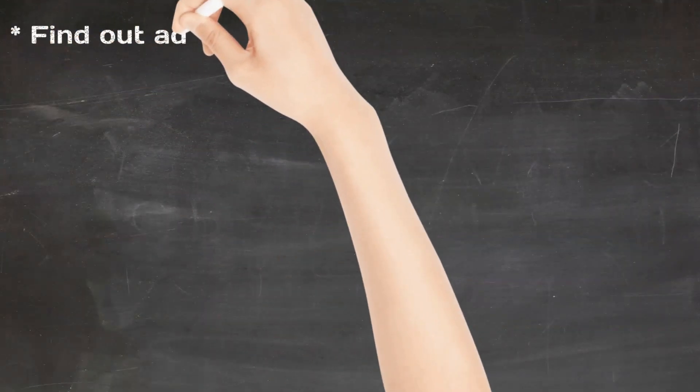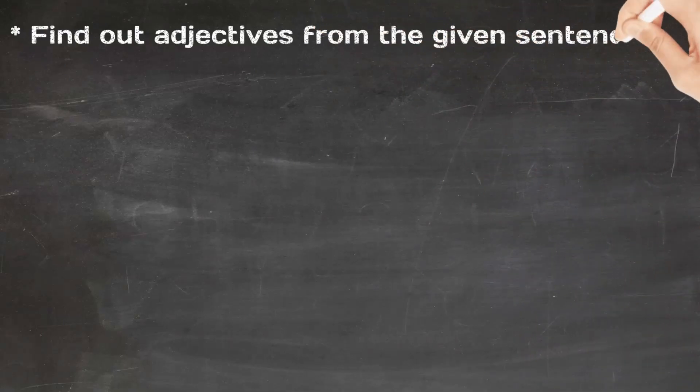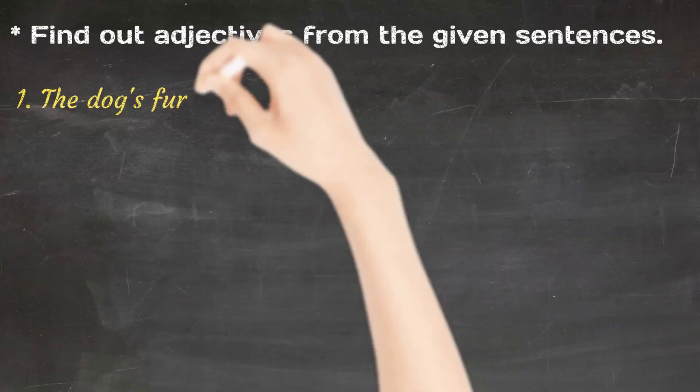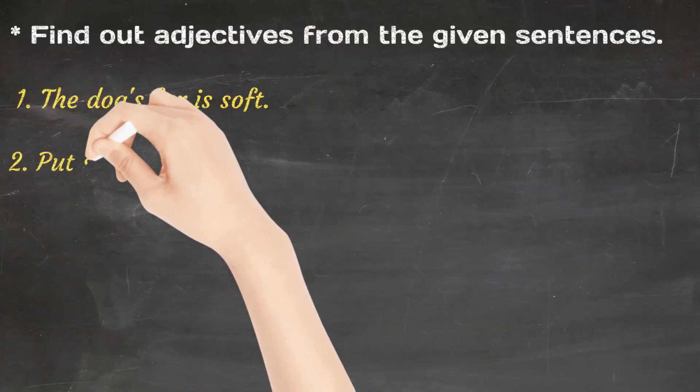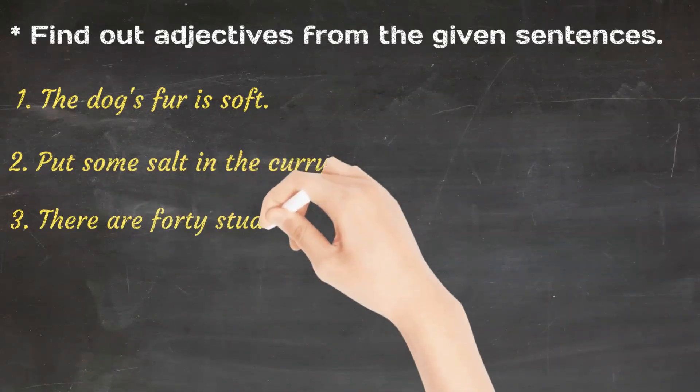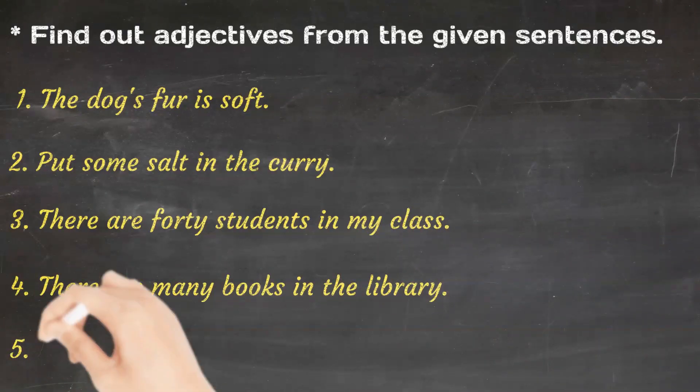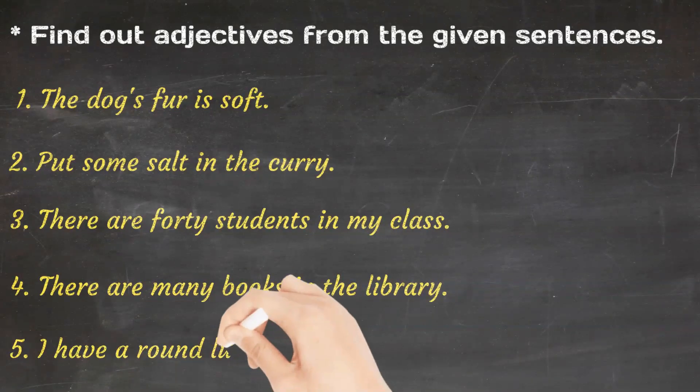Find out adjectives from the given sentences. There are 40 students in my class. There are many books in the library. I have a round lunch box.